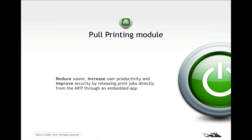So, one of the new modules is pull printing. Pull printing is a way for the user to submit the job, either from a mobile device or from a driver that's shared out, and walk up to an MFP and view their queue. So, now all the jobs aren't just spit out immediately to the printer, where anybody can walk by and grab them, or where they can get lost or mix in with other stuff. But the user can walk up, log in, see all of their jobs, and select which job they want to print right at the printer.